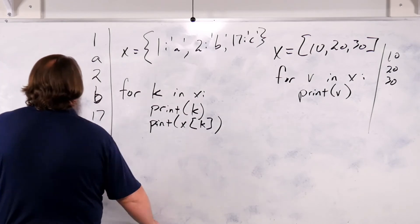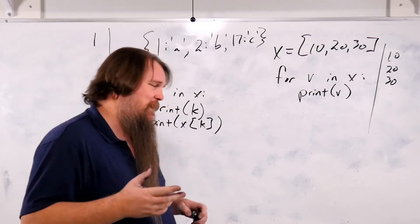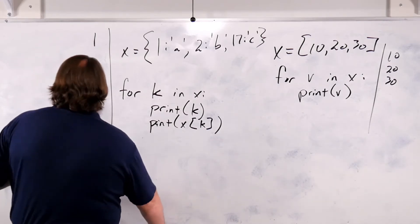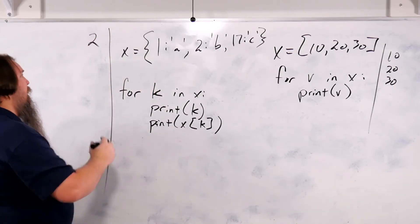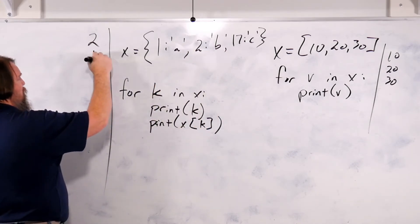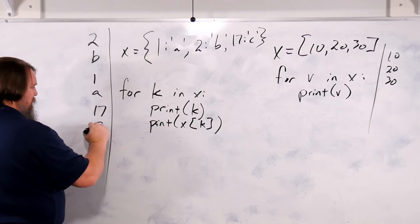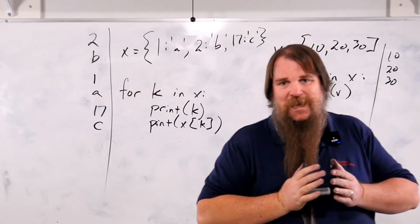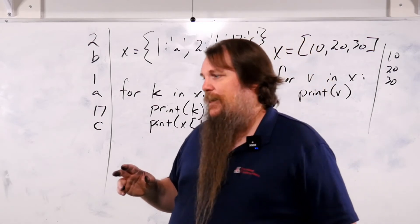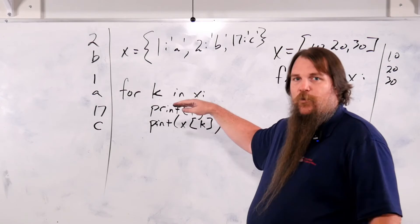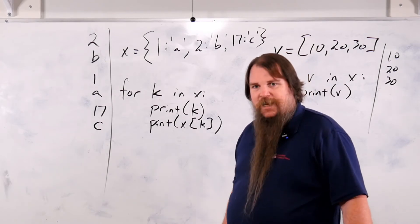That's not really what happens — it could be almost any order. So maybe you would get key 2 first, print its value b, then get 1 and print its value a, then get 17 and print its value c. When you iterate over a dictionary, you cannot assume that the keys arrive in any particular order. So just be aware of that.